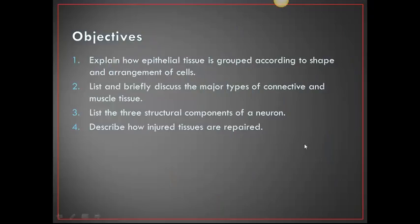Tissues lecture. The learning objectives for this lecture are to explain how epithelial tissues are grouped according to shape and arrangement of cells, list and briefly discuss the major types of connective and muscle tissue, list the three structural components of the neuron, and describe how injured tissue is repaired.